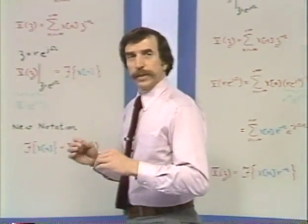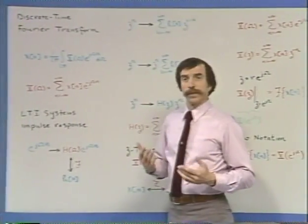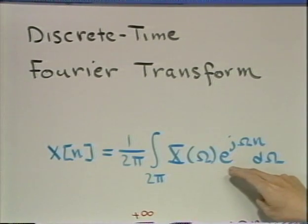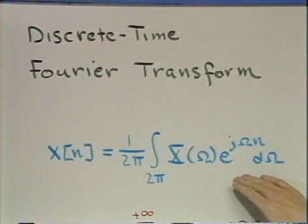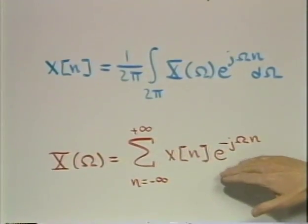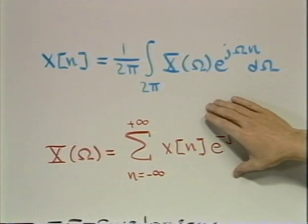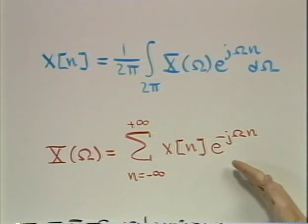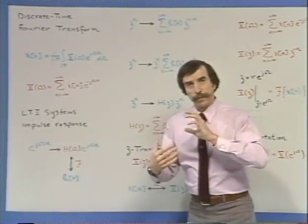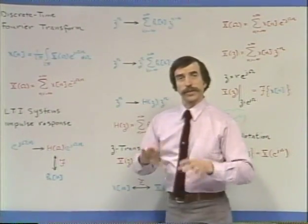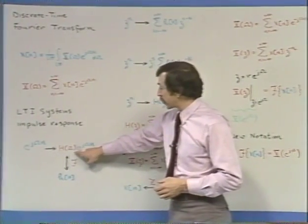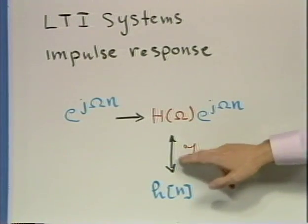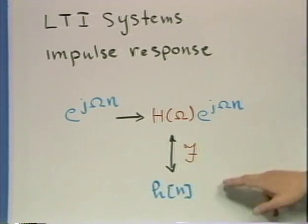Just as in continuous time, in discrete time the Fourier transform corresponded to a representation of a sequence as a linear combination of complex exponentials — this was the synthesis equation, with the corresponding analysis equation. As you recall, and as is the same for continuous time, the reason we picked complex exponentials was because they are eigenfunctions of linear time-invariant systems. If you have a complex exponential into a linear time-invariant system, the output is a complex exponential, and the change in complex amplitude — which corresponds to the frequency response — led to the definition of the Fourier transform, namely the Fourier transform of the impulse response.